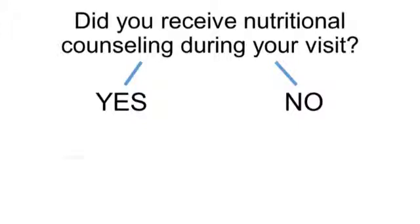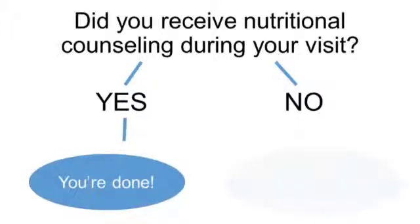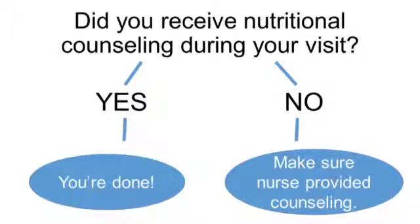Another example comes from primary care, where a group was looking at how to provide nutrition counseling for their teenage patients. They had a standardized process to ensure that information was made available to the teenager while the doctor was in the room, but sometimes the process failed — they were busy and other things got in the way. So they developed a backup plan: every time one of the teenage patients checked out, the person at checkout would ask, 'Did you receive nutrition counseling during your visit?' If yes, they're done. If no, that person at checkout would ensure a nurse provided the nutrition counseling for that patient.